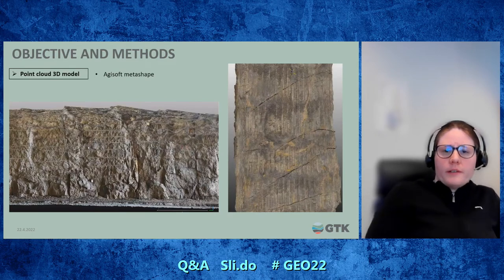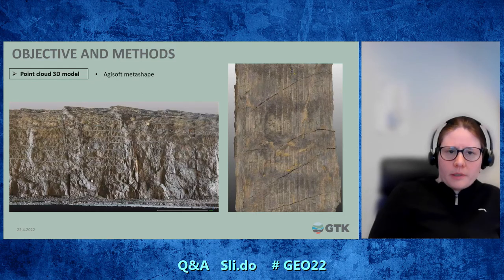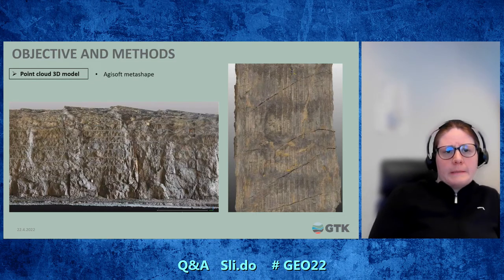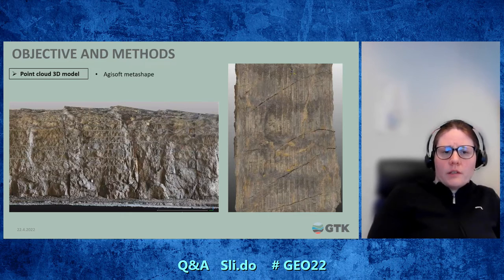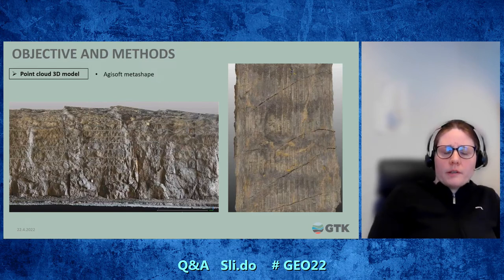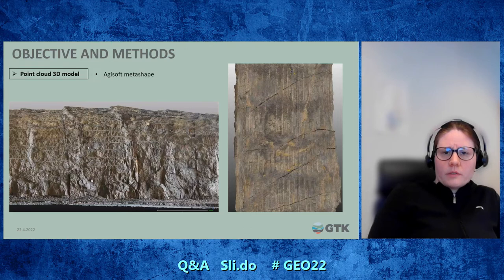When we got back to the office, we put those 4,000 pictures into software called Agisoft Metashape — it's a commercial one. We got a really excellent quality 3D point cloud, really sharp and photorealistic-looking. We can see some vertical faults that are shown nicely on the roof.